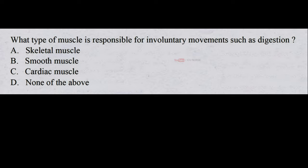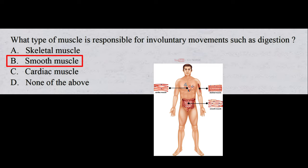What type of muscle is responsible for involuntary movements such as digestion? A. Skeletal muscle. B. Smooth muscle. C. Cardiac muscle. D. None of the above. And the correct answer is B. Smooth muscle. The type of muscle found in the digestive system is called smooth muscle.